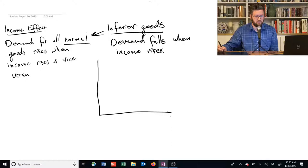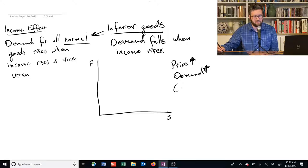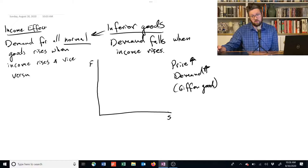Inferior goods can lead to a strange situation, which is kind of a curiosity, where the price rises and demand for the good also rises. When this happens, this is called a Giffen good.